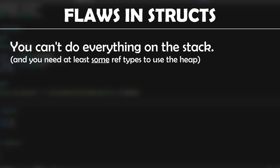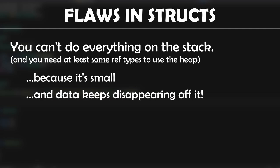The heap does exist for a reason. There are two reasons you can't do everything on the stack. Number one: it's small — small enough that you wouldn't dare try to put my array from earlier on there, that's begging for a stack overflow. And number two: data keeps disappearing off it. When you return from a function, all your newly pushed stack data is gone, so you'd have to return every single thing you want to keep around from a function and bring it up to a function that you won't return from, like main. You've basically just made an inefficient heap with the stack at that point, and trying to do this would be not only impossible but it would crash horribly into struct flaw number two.